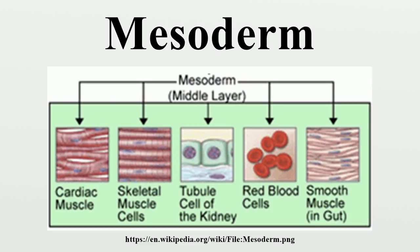The neural tube and epidermis also provide signals. The intermediate mesoderm connects the paraxial mesoderm with the lateral plate, and eventually differentiates into urogenital structures consisting of the kidneys, gonads, their associated ducts, and the adrenal glands. The lateral plate mesoderm gives rise to the heart, blood vessels, and blood cells of the circulatory system, as well as to the mesodermal component of the limbs.